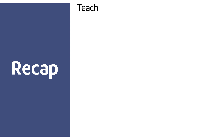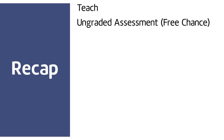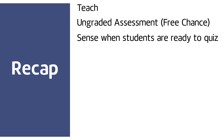Let's recap the process. First, we begin by teaching. Then, relatively early on in the unit, we give an ungraded opportunity for students to make mistakes — I like to call it a free chance. Next, as we're teaching, we try to get a sense for how students are doing and when they're ready to quiz. We don't want to quiz too early, but we also want to make sure we don't spend too much time on certain concepts. Then, a couple days before the quiz, we unpack the quiz by giving groups an opportunity to look at the actual quiz and ask clarifying questions.